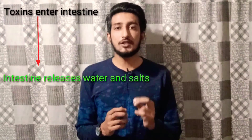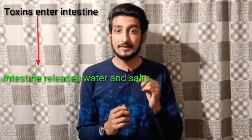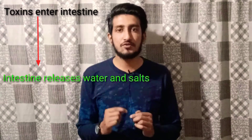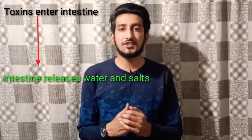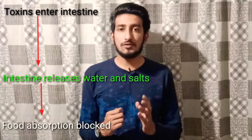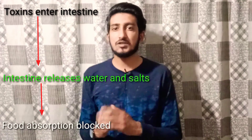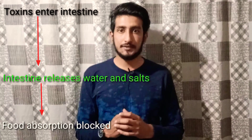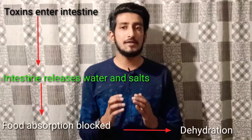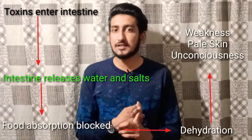If diarrhea prolongs for a very long time, unconsciousness can occur. The mechanism behind diarrhea: whenever toxins enter into our intestine, our intestine tends to move those toxins out of the body. To do so, the intestine releases water and electrolytes. Within two to three days, toxins are cleared, but during this time no foodstuff is fully absorbed — it passes out along with excessive water and electrolytes, causing severe dehydration, weakness, pale skin, and unconsciousness.